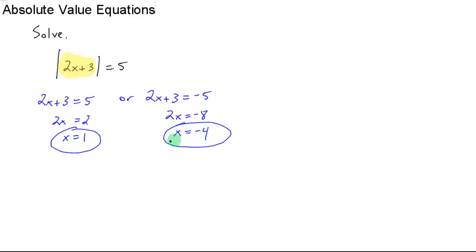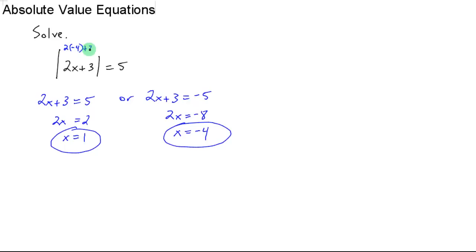And if you think about it, it makes sense. If you plug in 1 for x, you get 2 times 1 plus 3 inside, which is 5, and the absolute value of 5 is 5. If you plug in negative 4 for x, you have 2 times negative 4 plus 3 inside. 2 times negative 4 is negative 8. Negative 8 plus 3 is negative 5, and the absolute value of that is positive 5 as well.